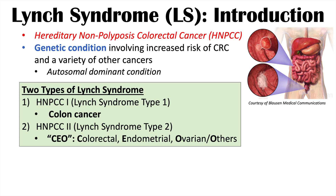In Lynch syndrome type 2, we see familial carcinomas — a group of cancers that can occur within the family, not only colon cancer but other types as well. A way to remember the more common cancers is the mnemonic CEO: C for colorectal cancer, E for endometrial cancer, O for ovarian cancer, and O for others.